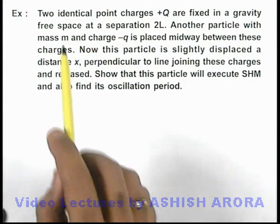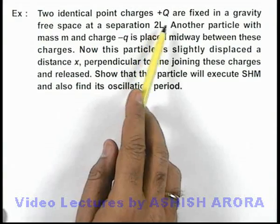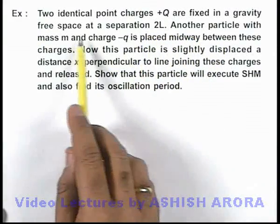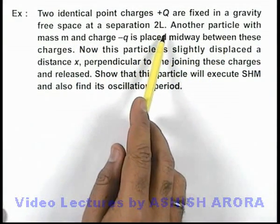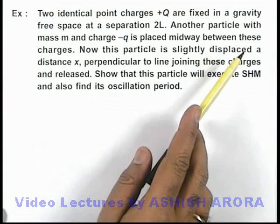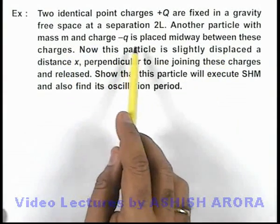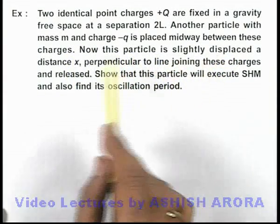In this example, we are given that two identical point charges +Q are fixed in a gravity-free space at a separation 2L. Another particle with mass m and charge -q is placed midway between these charges.